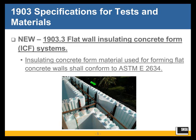Section 1903.3 says insulating concrete form material used for forming flat concrete walls shall conform to the relatively new ASTM standard E2634. This is talking about a type of wall where the forms stay in place after the wall is cast, acting as insulation. The concrete industry was promoting this type of construction in many parts of the country, though whether it has caught on I cannot really tell you. But in any case, if you are going to use this form of construction, the insulating concrete form material must comply with the new ASTM. This requirement is not in ACI 318 — the IBC is adding it.